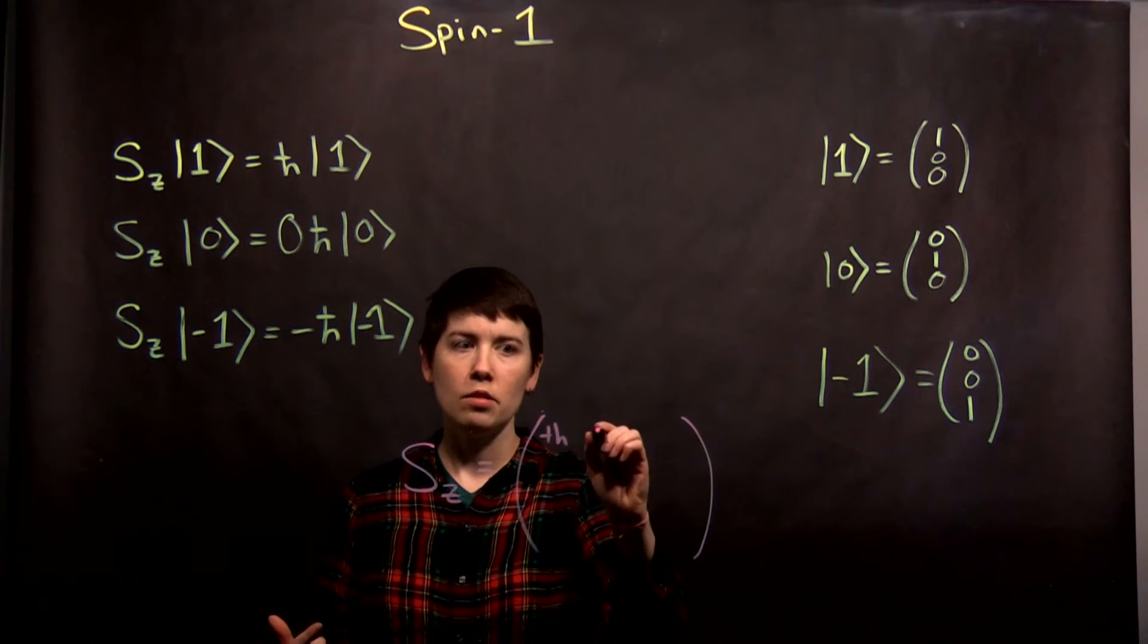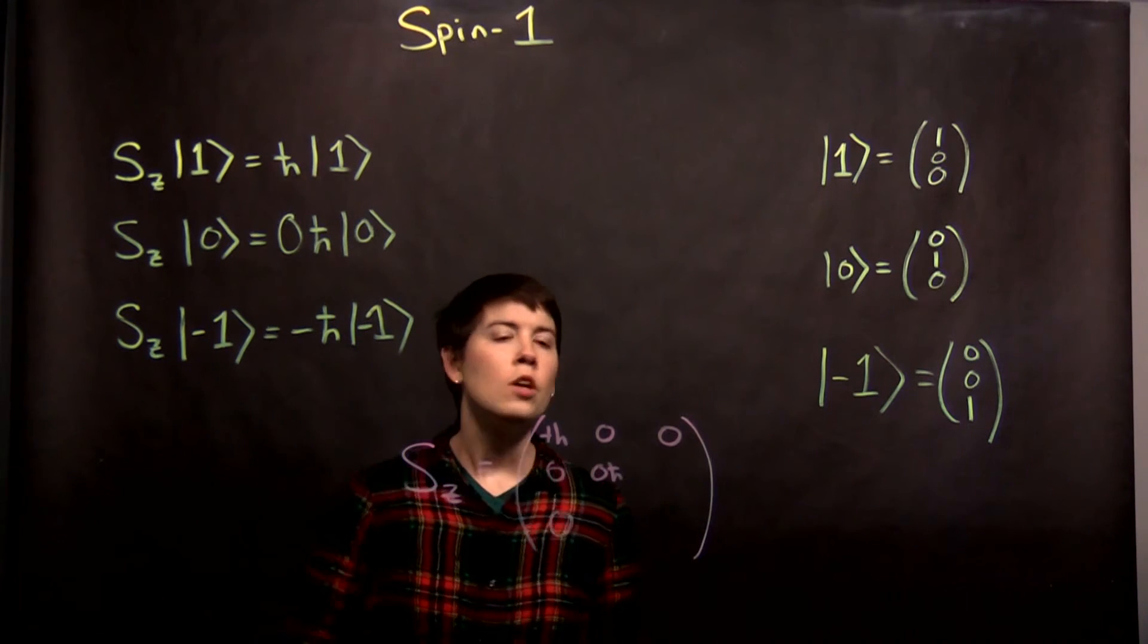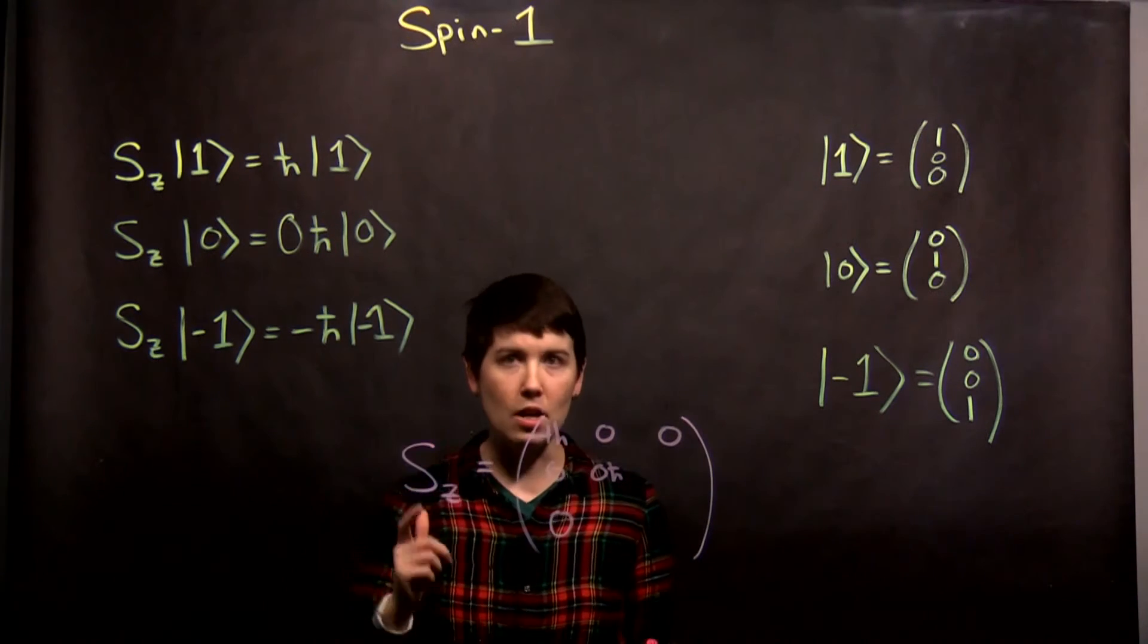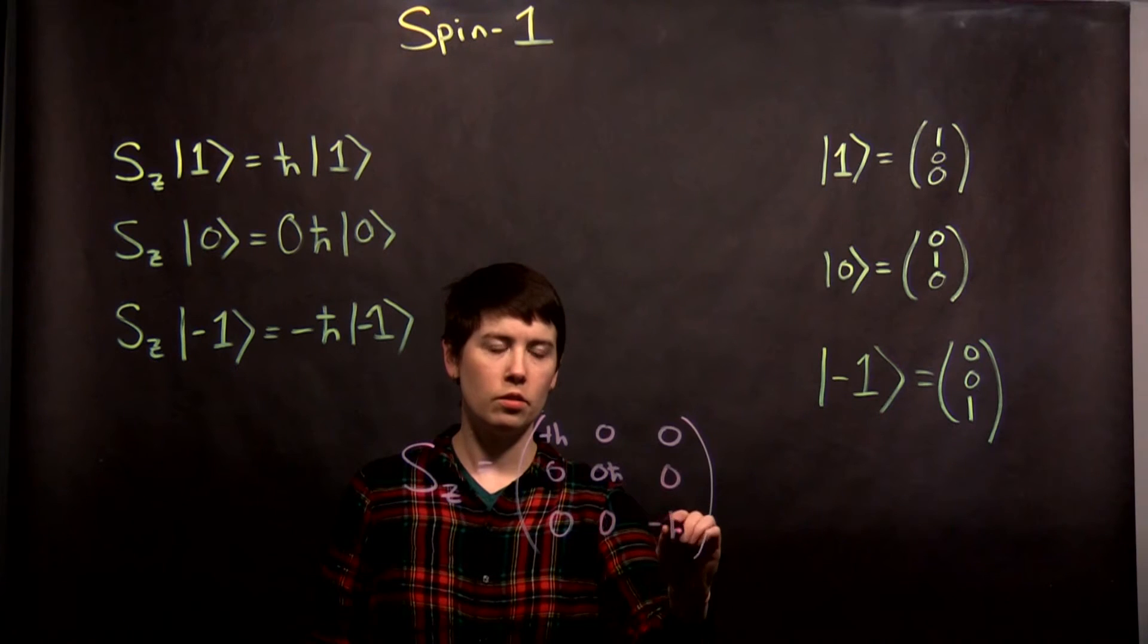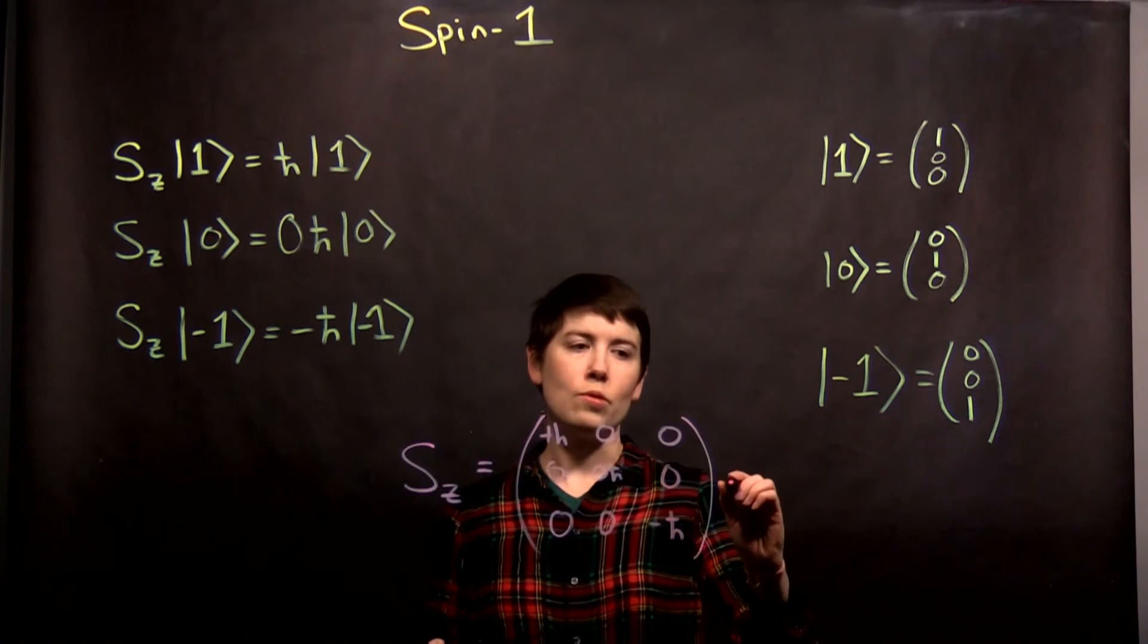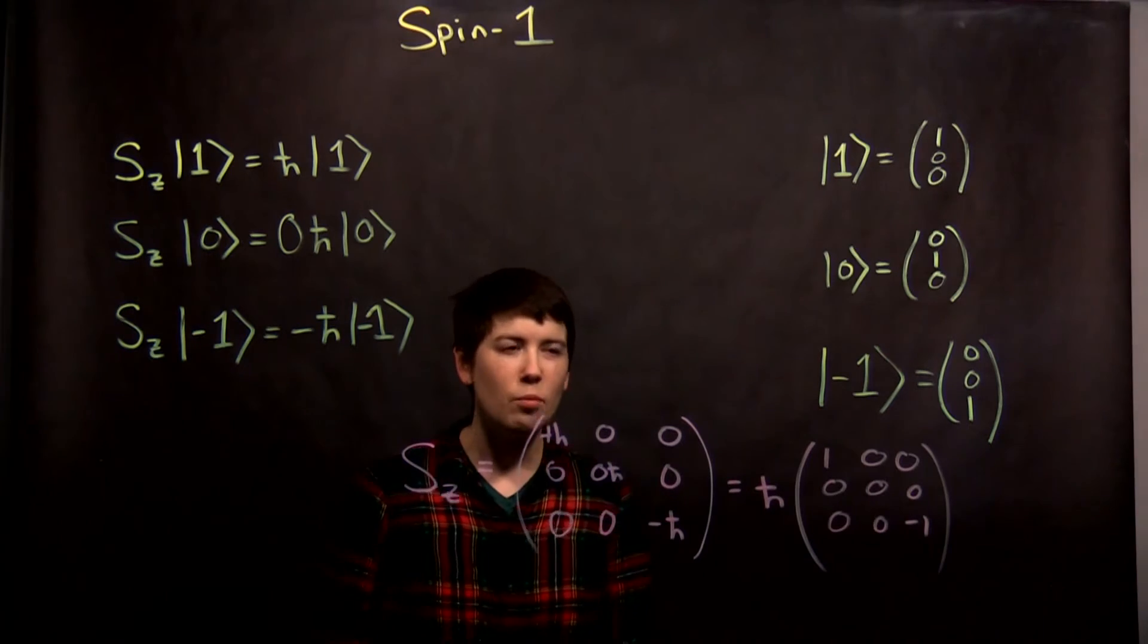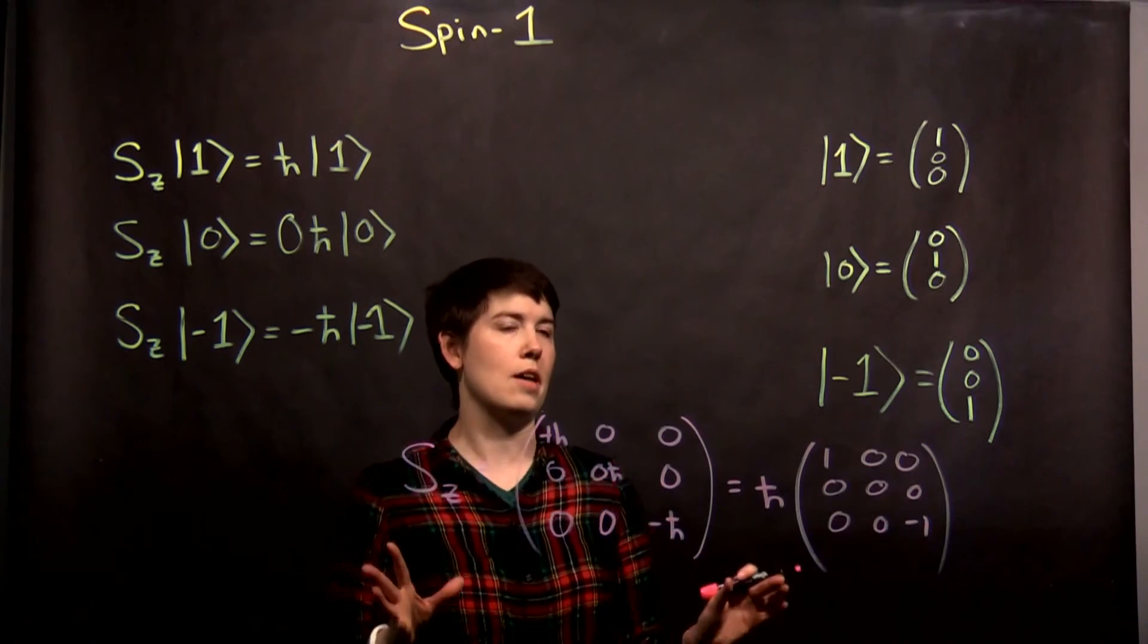So this is plus h-bar, zero, zero, zero, zero. My second diagonal element is zero h-bar. Obviously zero times h-bar is the same as zero. It's a little bit helpful to write it this way so that you remember it is an eigenvalue here. It is not just equal to literally zero. And then we have negative h-bar. And you could have written this as plus one h-bar, negative one h-bar, that works too. If you wanted to simplify this the most, you can write this as h-bar, one, zero, zero, zero, zero, zero, zero, zero, negative one. And that's our operator. But again, it's sometimes helpful to really write this explicitly this way, to remember that you can't just ignore this. Something is actually happening there.